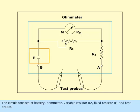The circuit consists of battery, ohmmeter, variable resistor R2, fixed resistor R1 and test probes.